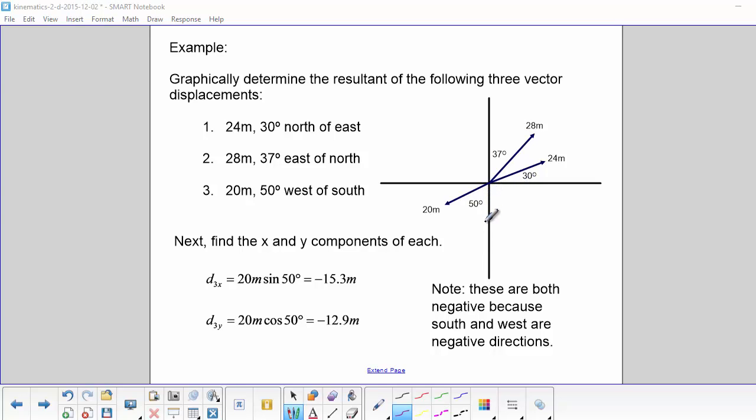For our last vector, our X component, we would use sine again because it's opposite of our angle. And for our Y component, we would use cosine again because it is adjacent to our angle.